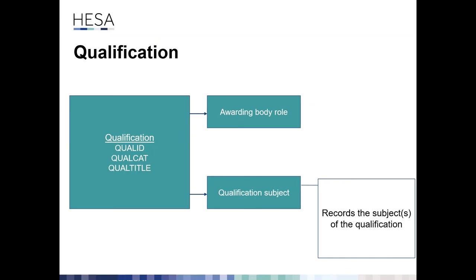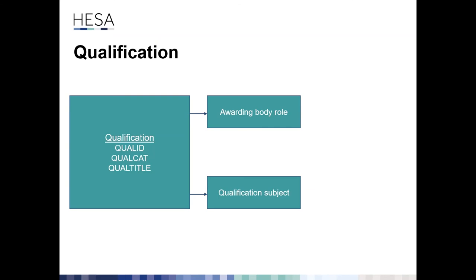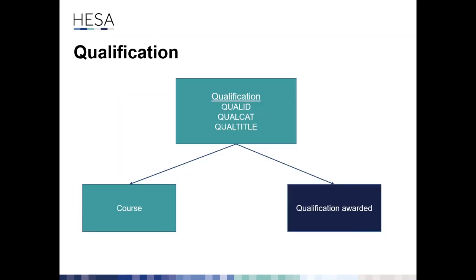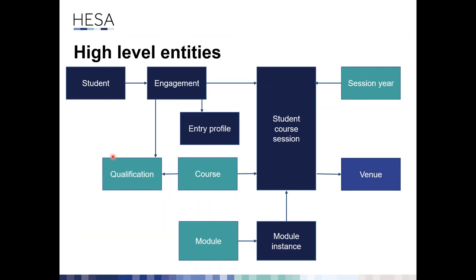The qualification entity also has two sub-entities: one for the awarding body or bodies if there are joint awarding bodies, and one for qualification subjects recorded in HECOS code. Notably, we're recording subjects against qualifications rather than courses. This links to both the course entity — to say students on this course are aiming for that qualification — and to the qualification awarded entity, to say a student has achieved it.